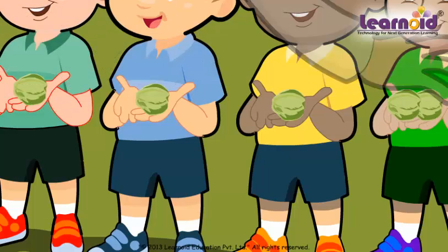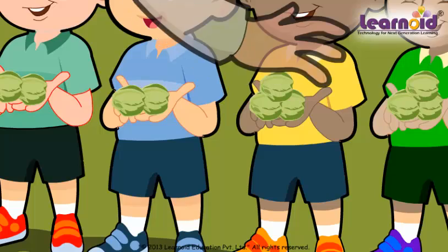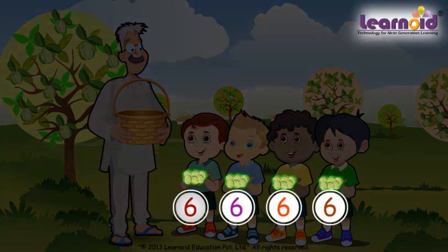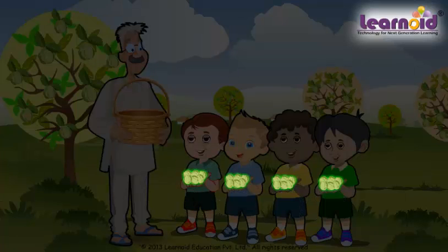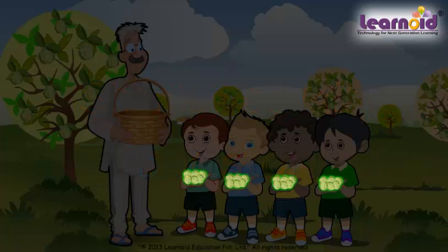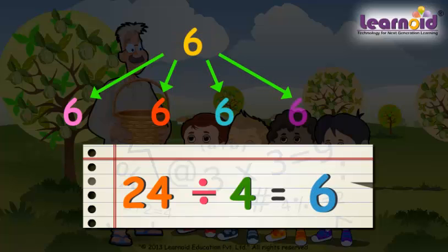Then one more guava to each, and he keeps giving the guavas. All guavas are now finished. Each friend got six guavas. 24 guavas shared by four friends. Sharing equally is called division. 24 divided by four is six.